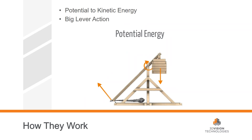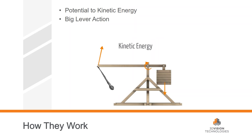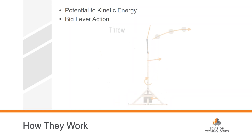A trebuchet works because you're building potential energy into the system. By raising that counterweight to a certain height — our throwing arm is actually eight feet, a four-by-four — you're putting potential energy into the system with a bunch of weight in that basket. When you pull the firing pin, it allows that weight to drop, converting potential energy to kinetic energy, and starts bringing that sling out. You can tune the sling pin angles to achieve a nice 45-degree trajectory, or a flatter or higher arc, based on the weight and size of the ball. At the apex of the arc, the sling opens up and releases the projectile toward the target.